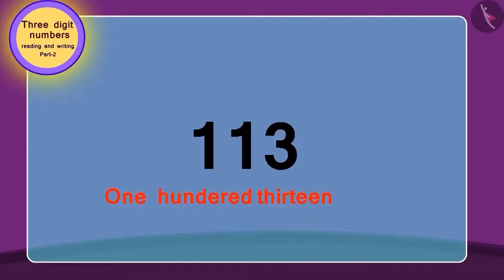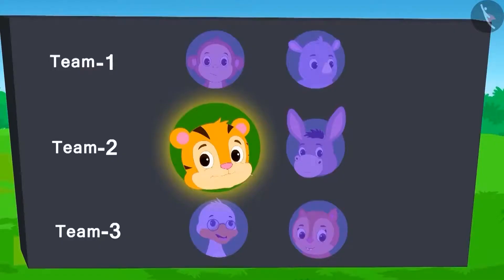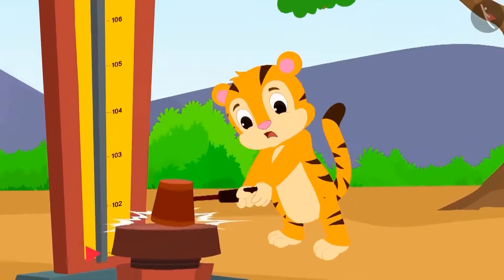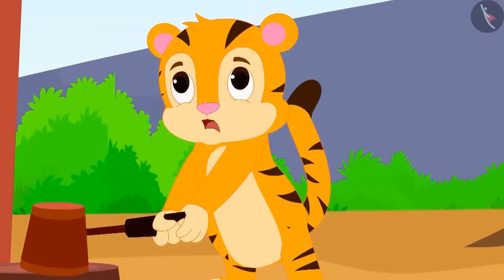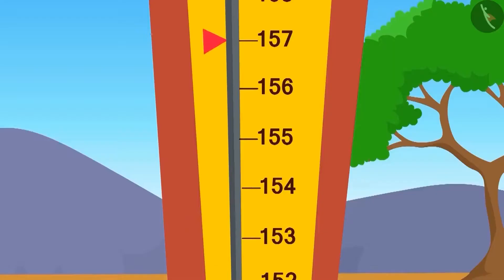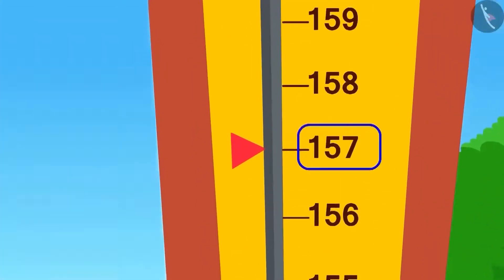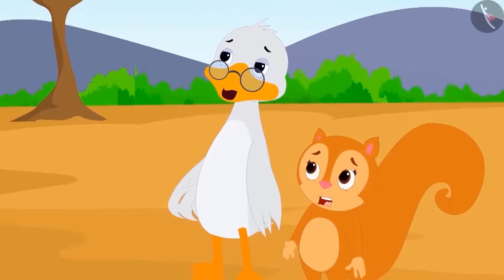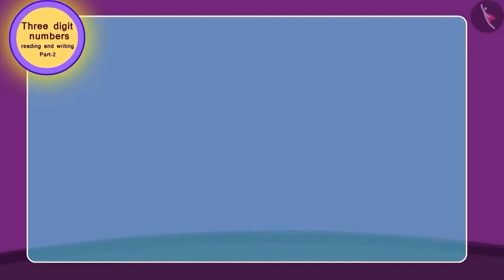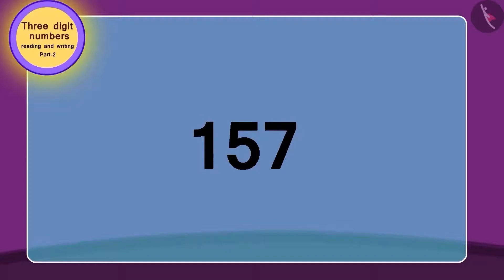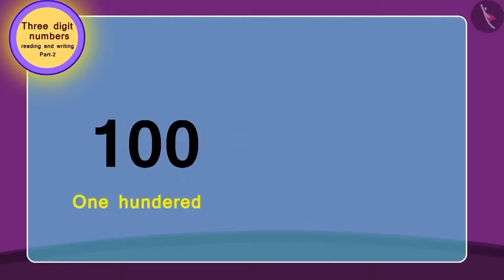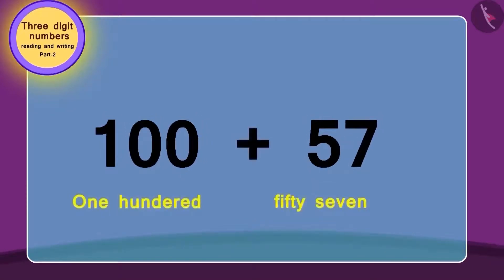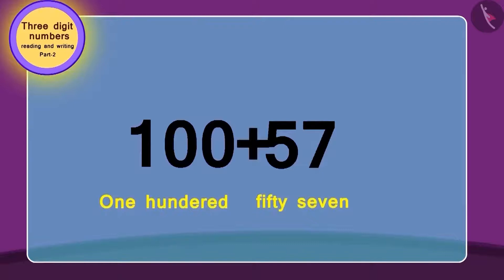Shere Khan from team 2 is now showing his strength in the game. Wow! The flag reached above Gagu's mark — the number was 57 points above 100. Chanda and Badbola uncle have started to sweat. Let's see which number this is. We will use the process we just learnt. In this way we can read this number: 157.